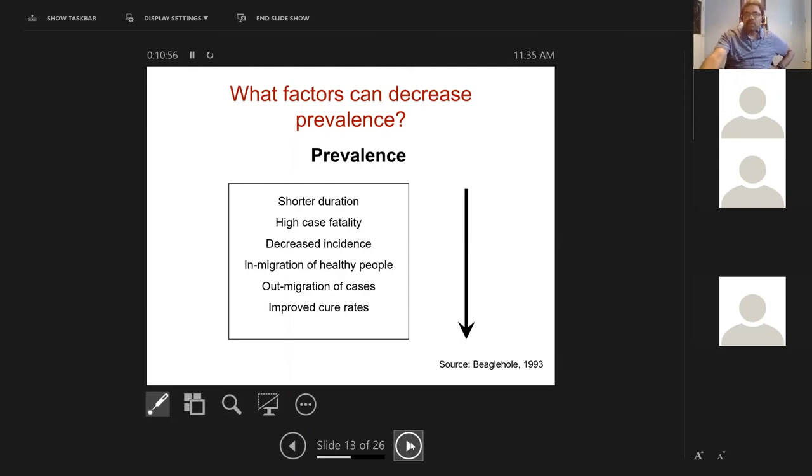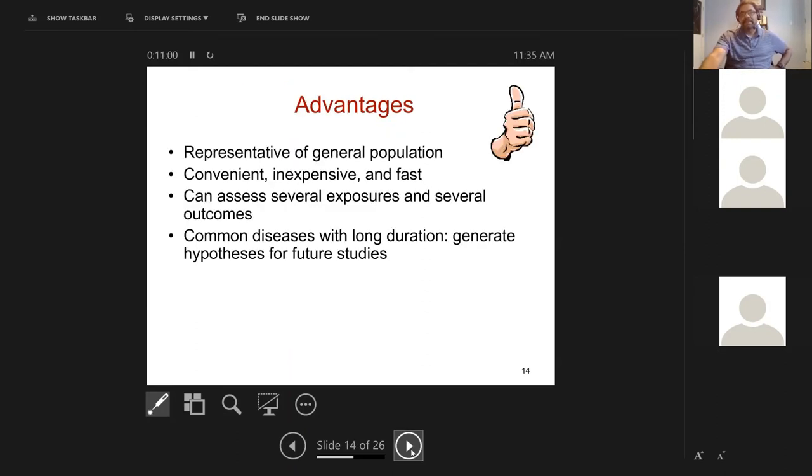So what is the advantage of a cross-sectional study? Well, you could get a representation of what is happening in the general population. It's fairly convenient, could be inexpensive, could be fast. Can look at several exposures and several outcomes. If you are interviewing people, you can ask them about a whole bunch of things. Like NFHS is a great example - it was supposed to be family and health, but then it goes well beyond contraception. You can ask about self-reported diabetes, self-reported tuberculosis, all sorts of interesting information can be gleaned from a large representative sample survey. And it's great for common diseases with long duration, but it's not great for acute short-duration diseases. And prevalence surveys are great because they can throw up interesting hypotheses that we can look at in future studies.